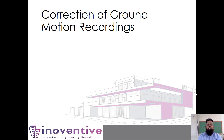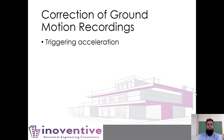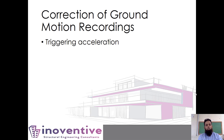When we record an acceleration time history, we can get errors from many parameters, but one of the most common sources of error is triggering acceleration. It is the minimum amount of acceleration required to make the instrument start recording. You can set the instrument to different sensitivities, but this can be tricky. If the instrument is too sensitive, it might start recording every time a vehicle drives nearby. But if it is not sensitive enough, an event may happen and the instrument may not record anything.